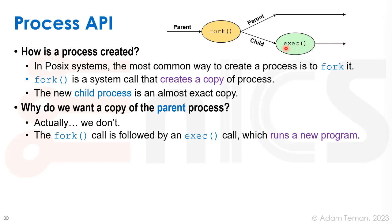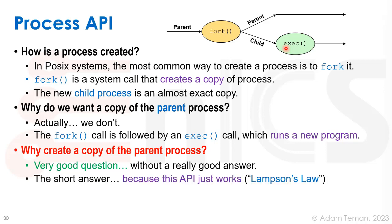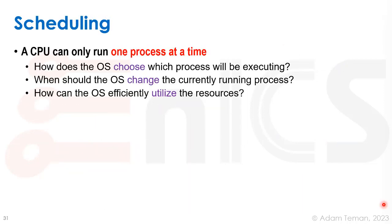After exec, the child process runs its own new program. This seemed strange to me at first. Why create a copy rather than just starting a new process? There's something called Lamson's Law: 'Get it right.' This API for POSIX just works. But there's a better reason: we want to run things on the child process before executing it — things like setting up pipes and redirects in Unix. We basically create a copy of the parent and then overwrite the program with the exec command.